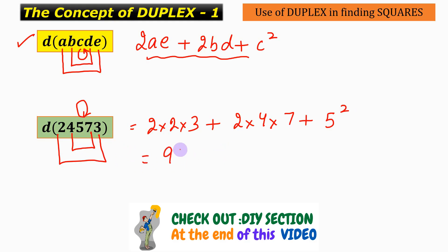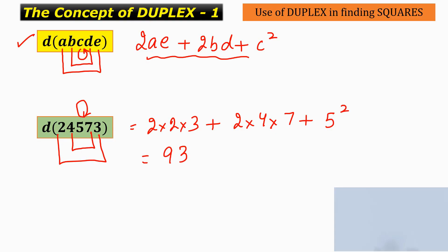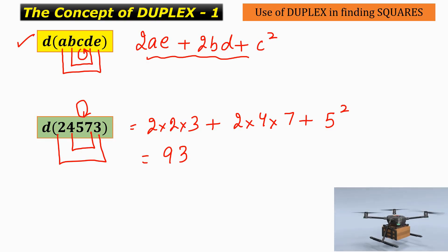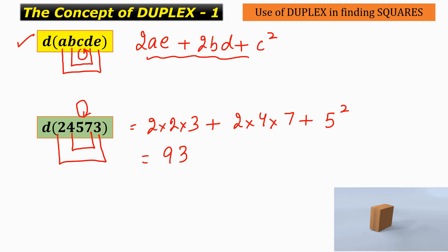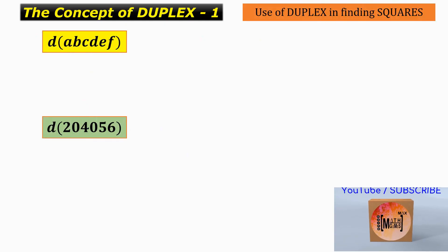In the subsequent videos — that is videos on the concept of duplex, videos 2, 3, 4, 5, and 6 — we will learn how to find the squares of two-digit, three-digit, four, five, or six-digit numbers using the concept of duplex. But for now let us check out the duplex of a six-digit number.